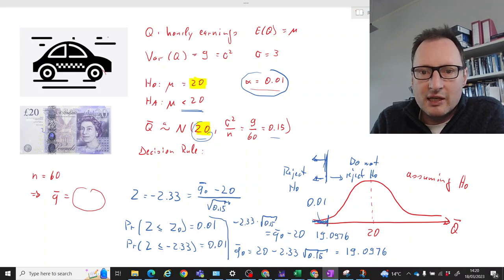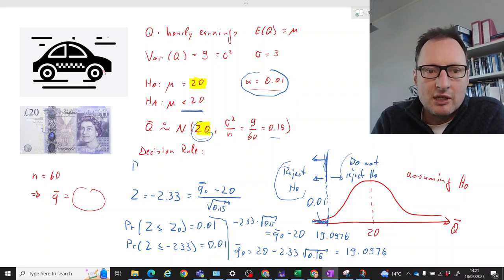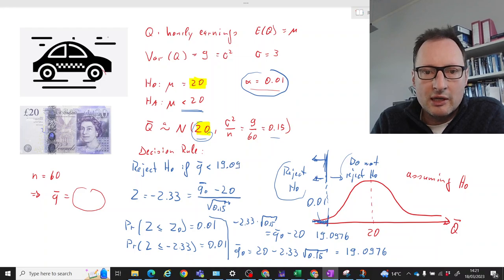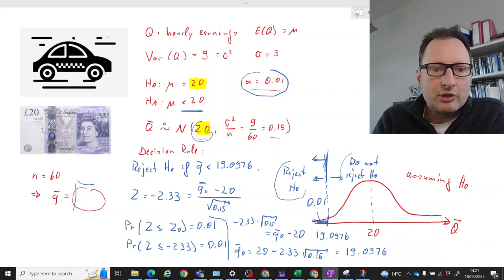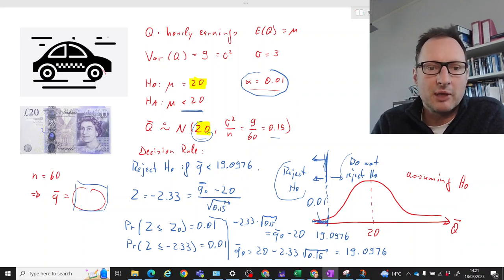So if we get a value smaller than that value we will reject, if not we will not reject. So if our sample mean is smaller than 19.0976, you can write down this decision rule without actually knowing what the sample mean is. I haven't told you what the sample mean is.